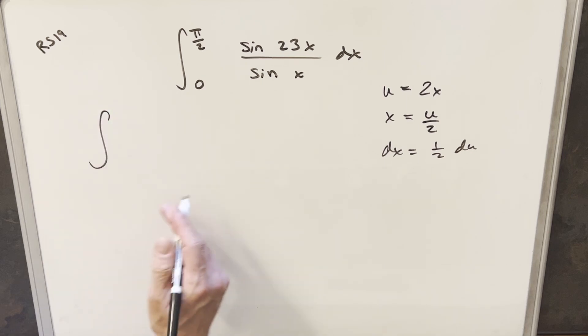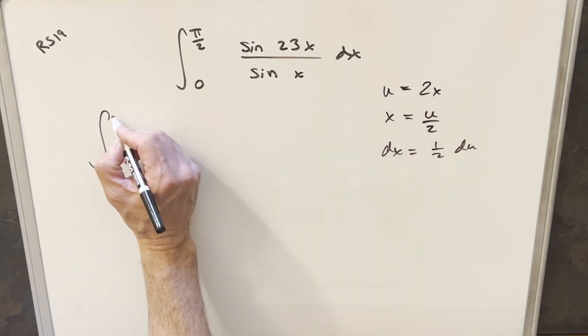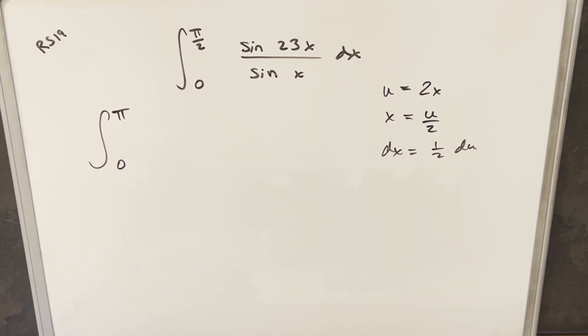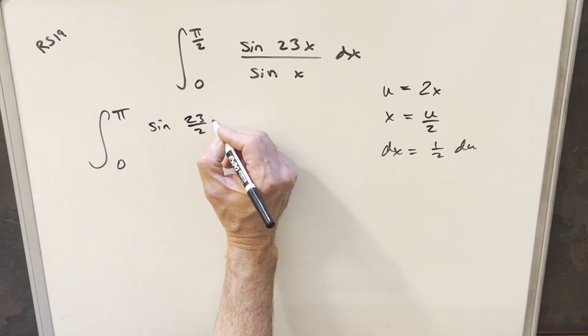Then we'll just make our substitution, so I'm going to plug in pi. We'll plug pi over 2 in for x, and we just get pi for our upper bound. Plugging in 0, we'll have 0. Then for sin of 23x, that's going to become sin of 23 over 2 u.